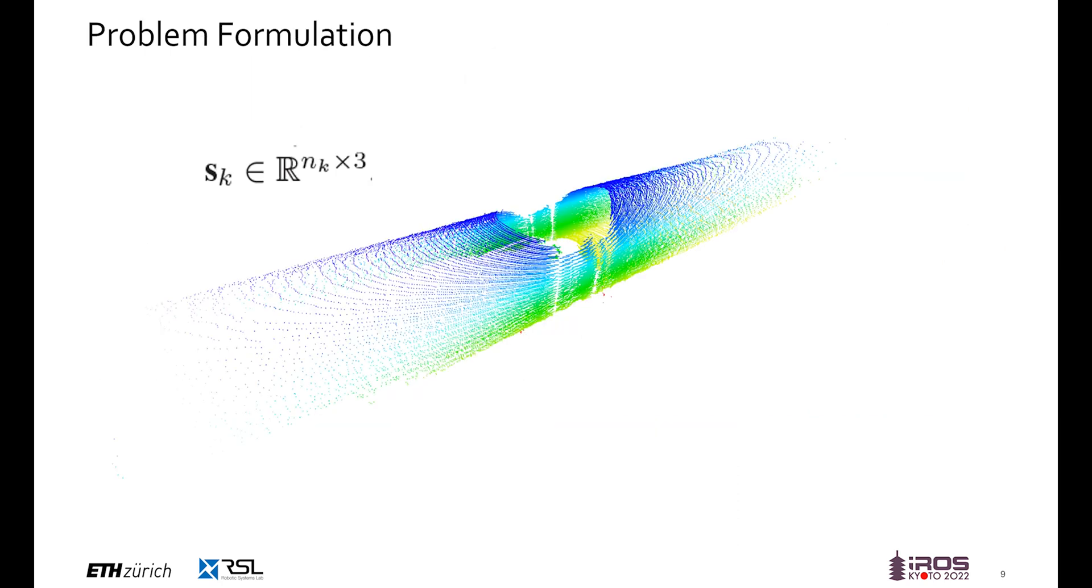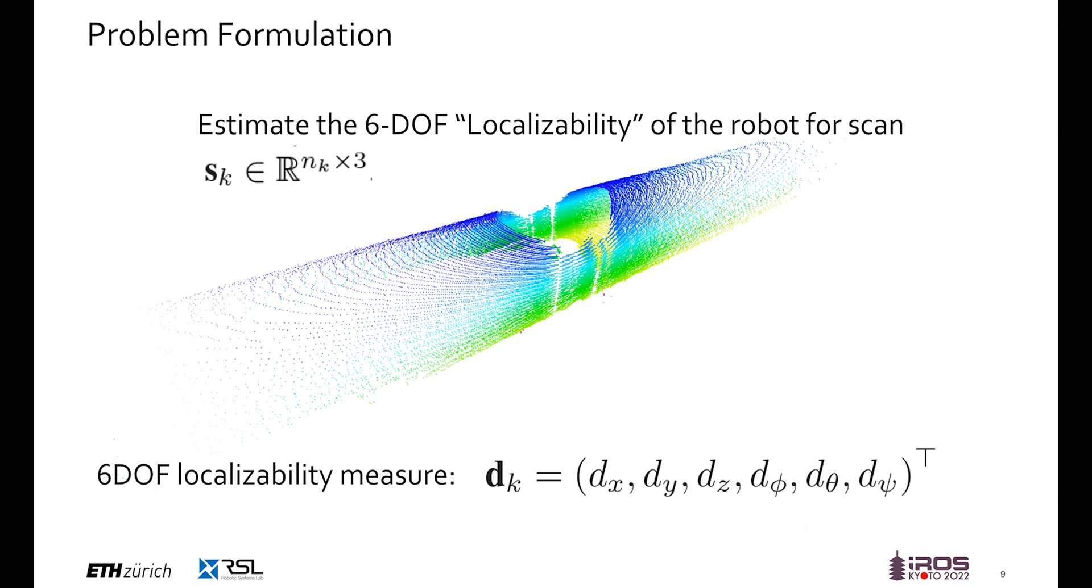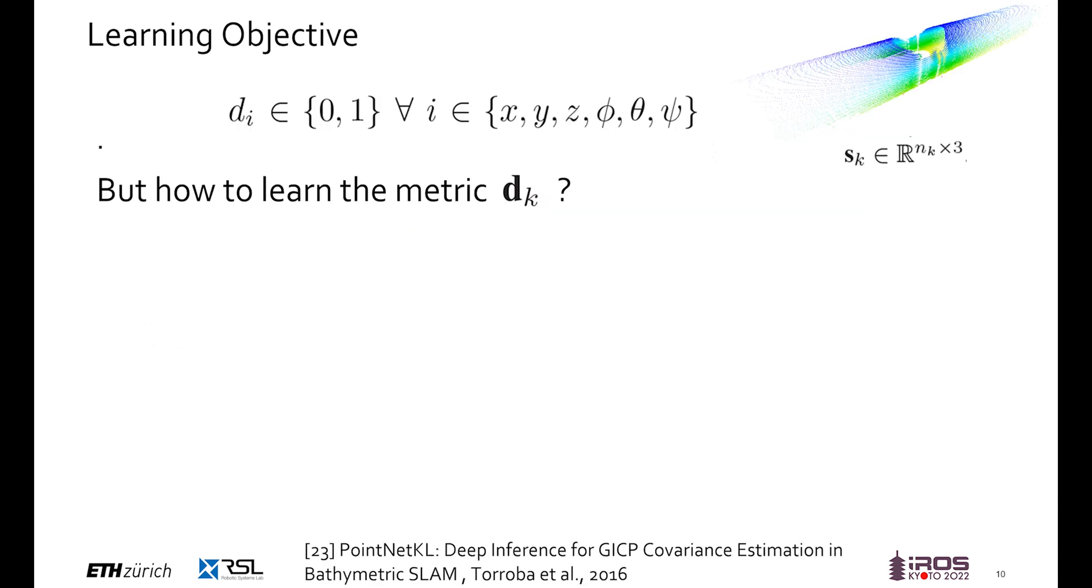To be specific, in our work, we would like to estimate the 6 degrees of freedom localizability for a LiDAR scan Sk. This vector dk contains XYZ translation and roll-pitch-yaw rotation localizability. Each entry of this vector is binary, where one denotes the given direction is non-localizable for scan-to-scan registration.